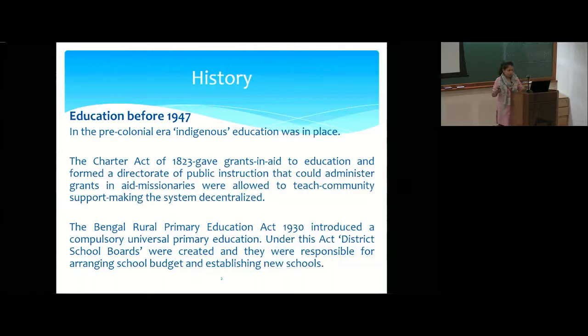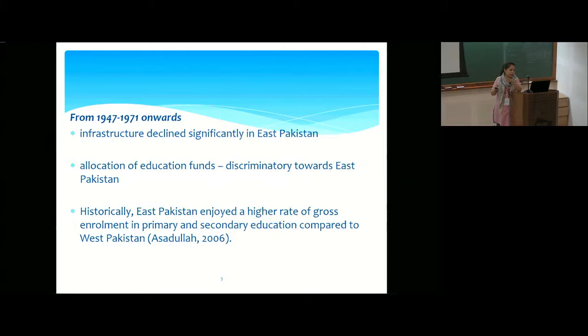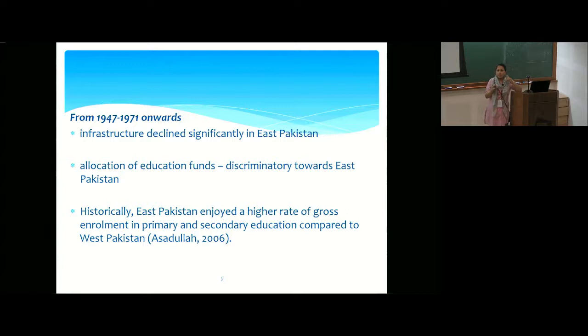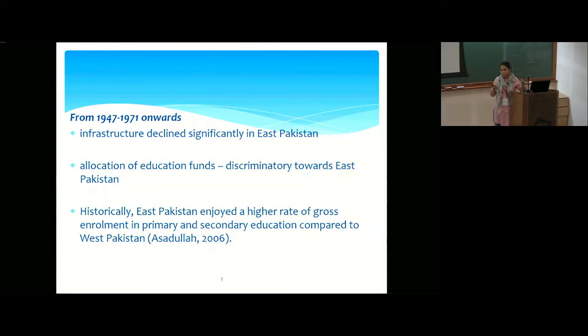From 1947 onwards, the partition of India created two new nations — India and Pakistan. Pakistan was composed of two areas: East Pakistan, presently called Bangladesh, and West Pakistan. West Pakistan ruled and administered East Pakistan. Discrimination was made in terms of funding allocations and infrastructure. Allocation of education funds was discriminatory in nature. Although historically East Pakistan enjoyed a higher gross enrollment rate in primary and secondary education compared to West Pakistan, such discriminations were still made.